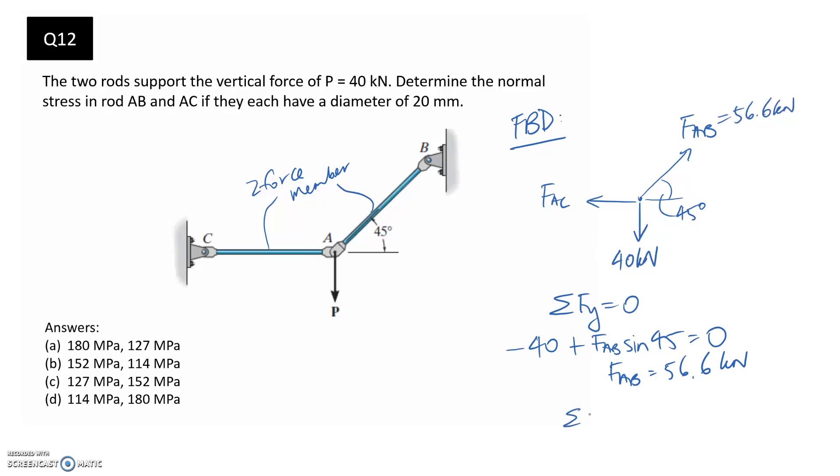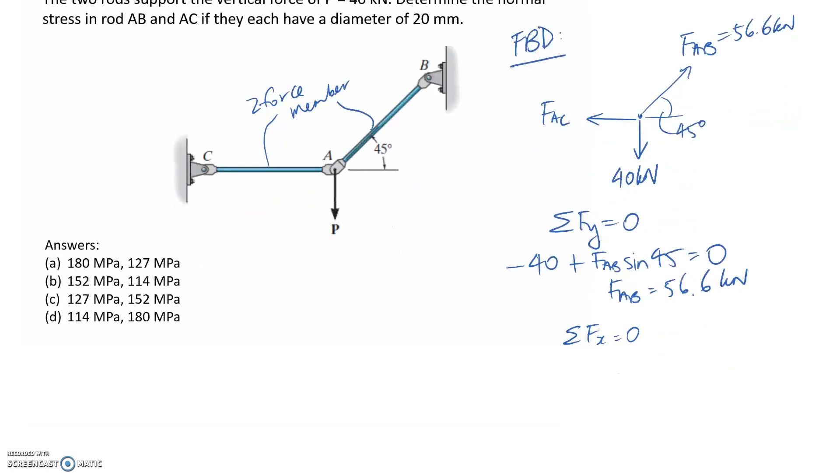Now we can sum forces in the x direction to be equal to zero. We have negative FAC. This is completely in the y direction, so it doesn't contribute. And we have part of this. It's going to be the cos side of the triangle. So FAC works out to be 40 kilonewtons.